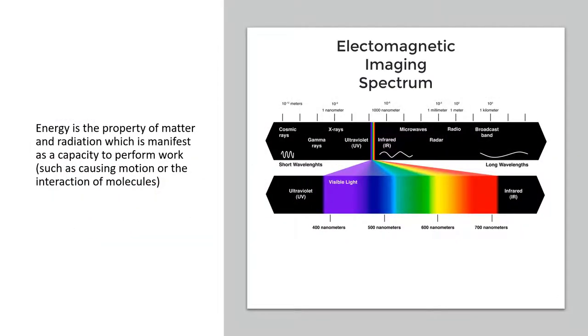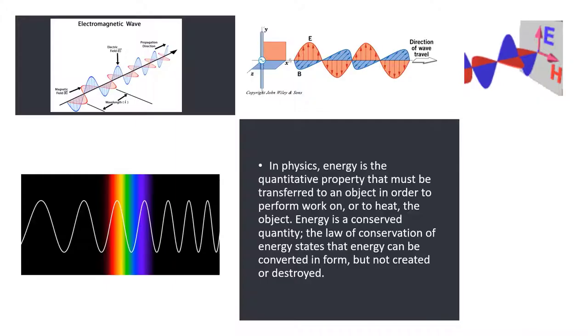Energy is the property of matter and radiation, which is manifest as a capacity to perform work, such as causing motion or the interaction of molecules. The law of conservation of energy states that energy can be converted in form, but not created or destroyed, and here we see electromagnetism as energy.